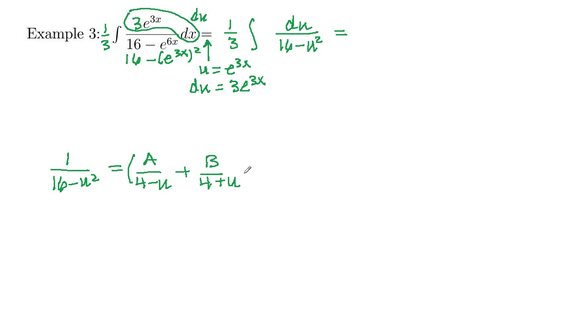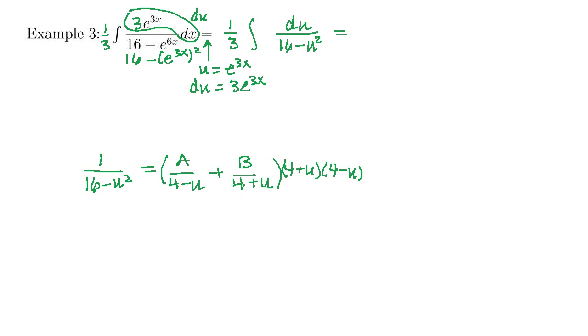Now we're going to multiply through by our LCD, which is 4 plus u, 4 minus u. Then 4 minus u, 4 plus u will cancel the 16 minus u squared there. So we get a 1. We're going to multiply that whole quantity in times each term here. Here the 4 minus u's will cancel. We'll be left with a times 4 plus u. Plus, when we multiply in here, the 4 plus u's will cancel. We'll have b times 4 minus u.